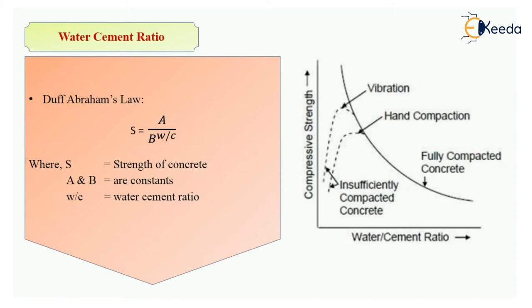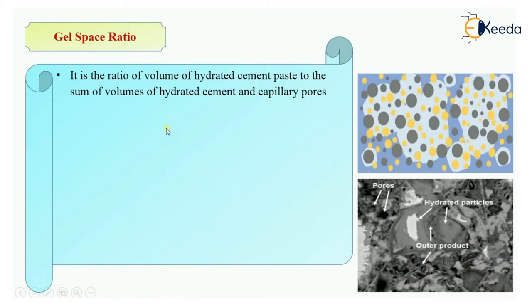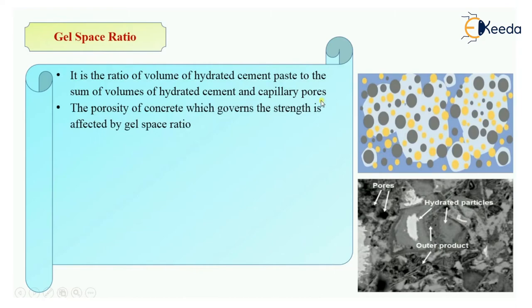Now let's see gel space ratio. It is the ratio of the volume of hydrated cement paste to the sum of the volumes of hydrated cement and capillary pores — simply, the ratio of volume of hydrated cement paste to the volume of hydrated cement plus the capillary pores or voids present in the cement paste.